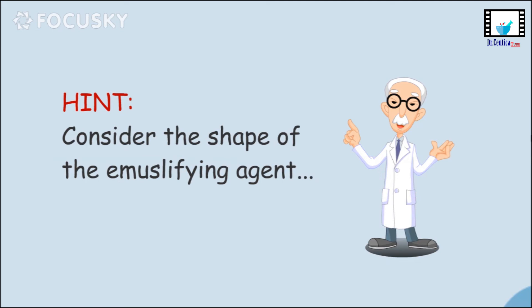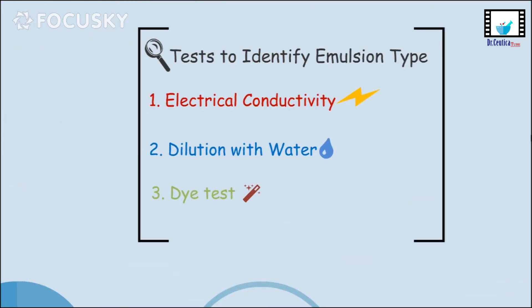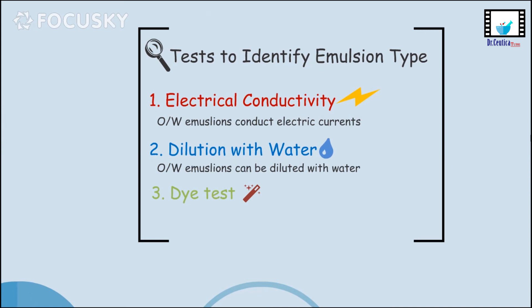These are the two main things which can help you identify the type of an emulsion from the formulation: the proportion of the phases with reference to the critical value, and the emulsifying agent used. However, if you have a ready-made emulsion and would like to know its type, there are several tests. One is electrical conductivity — water is a better electrical conductor than oil, so oil-in-water emulsions will conduct electrical current, unlike water-in-oil ones. Two is the dilution test — with water as the external phase, adding water to an oil-in-water emulsion is possible, but not to a water-in-oil one.